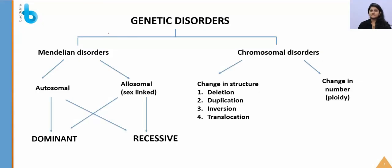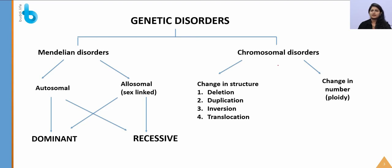Genetic disorders are classified into two categories: Mendelian disorders and chromosomal disorders. Mendelian disorders show a Mendelian pattern of inheritance and have two types — autosomal and allosomal (sex-linked). These are further divided into dominant and recessive. Chromosomal disorders involve a defect in the chromosome — either a change in structure or a change in number.